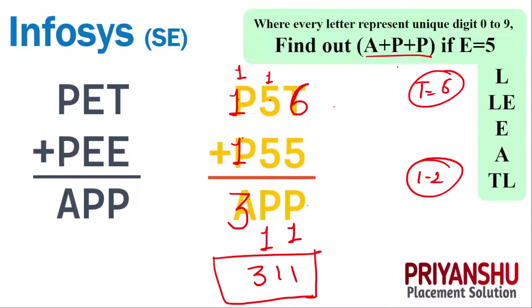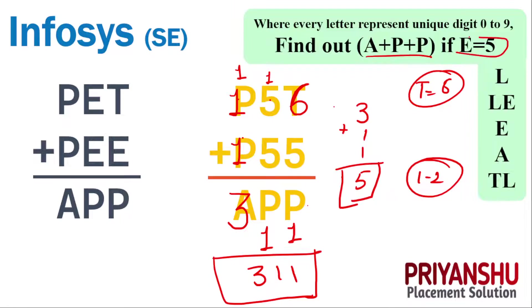So the final answer is A=3, P=1, P=1. But we need to find the value of A plus P plus P, so that is 3 plus 1 plus 1 equals 5. And the value of E is 5 — as you can see, E equals 5. So the final correct answer is E.